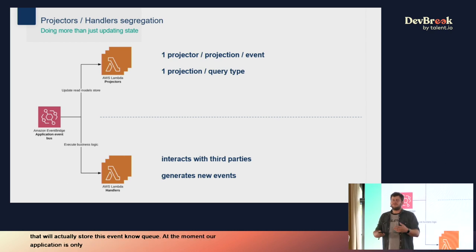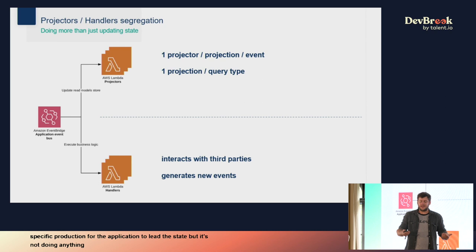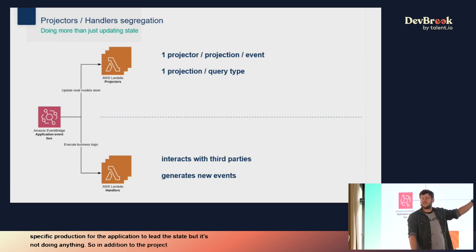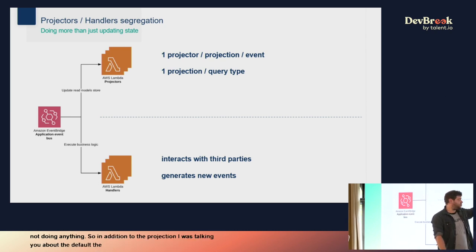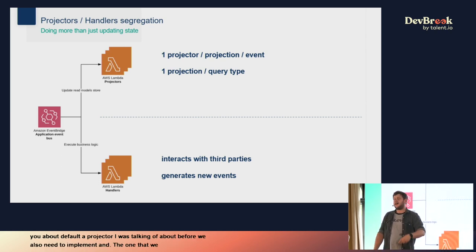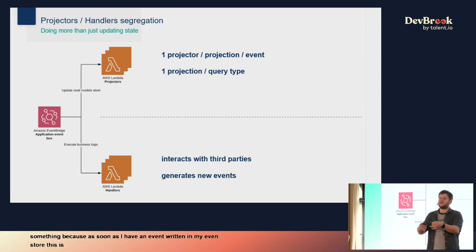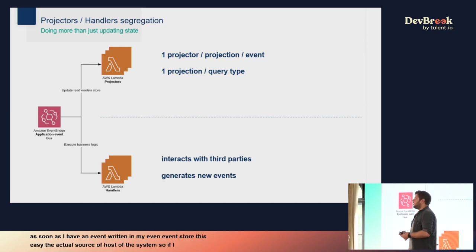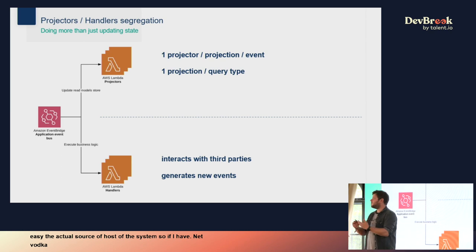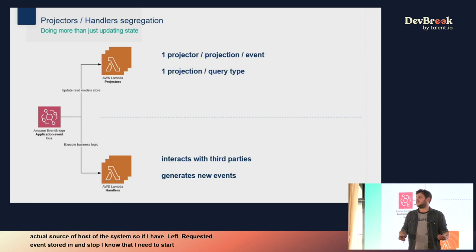At this point the application accepts commands and projects state for querying, but it doesn't yet take action. In addition to the projectors, we need to implement handlers — the ones that actually do something. As soon as an event is written in the event store, it becomes the source of truth. So if an alert-broadcast-requested event is stored, I know I need to start broadcasting the alert.